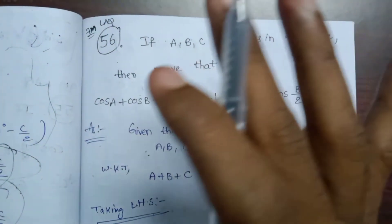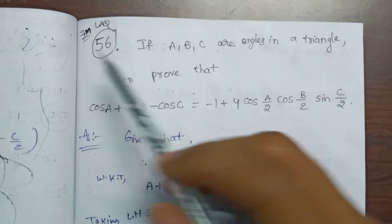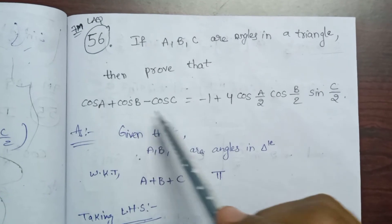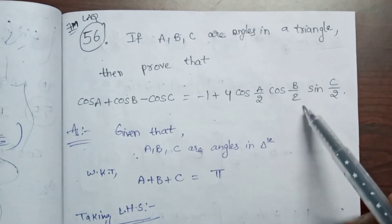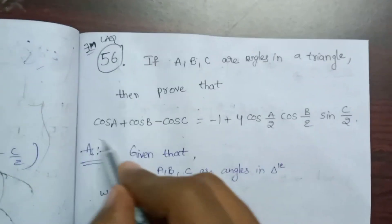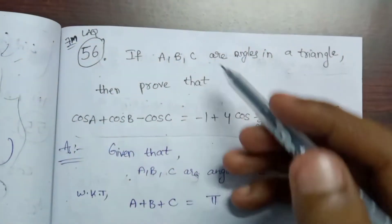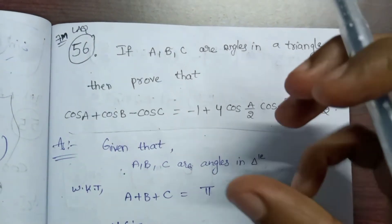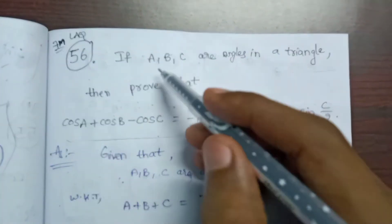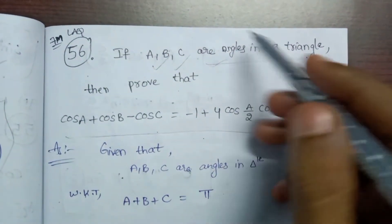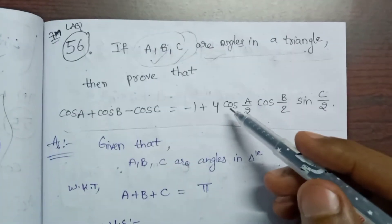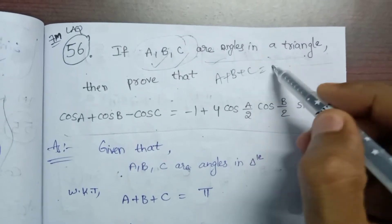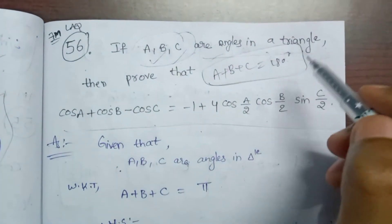Hi guys, next problem. This is a very easy problem. Problem 56: if A, B, C are angles in a triangle, then prove that cos A plus cos B minus cos C is equal to minus 1 plus 4 cos(A/2) cos(B/2) sin(C/2). This is a very easy problem. The condition we use is: sum of angles in a triangle is 180 degrees, so A plus B plus C is equal to 180 degrees.